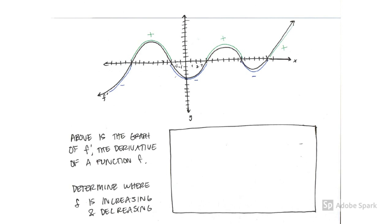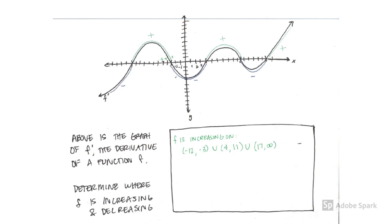Before I dive right into the problem, with derivatives we always want to be extra careful. So I'm going to look at the graph of the derivative and indicate to myself where the derivative is positive or negative. Positive is above the x-axis and negative is below the x-axis, so I indicated that here.